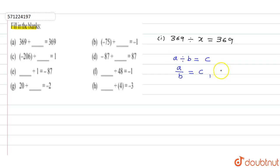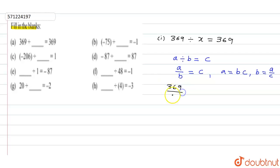We need to find the value of a, which is equal to b multiplied by c. If we want to find the value of b, then b equals a upon c. Similarly, in question one, if we want to find x, then 369 upon x equals 369, so x equals 369 divided by 369, which equals 1.